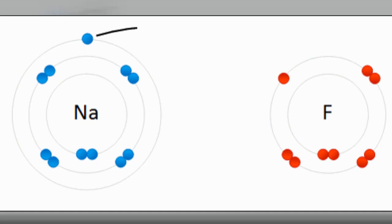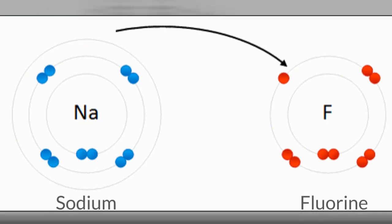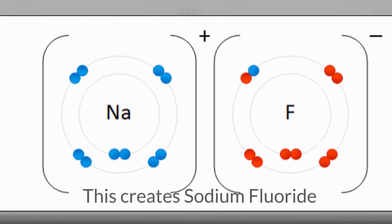An ionic bond is formed when valence electrons are transferred from one atom to the other to complete the outer electron shell.